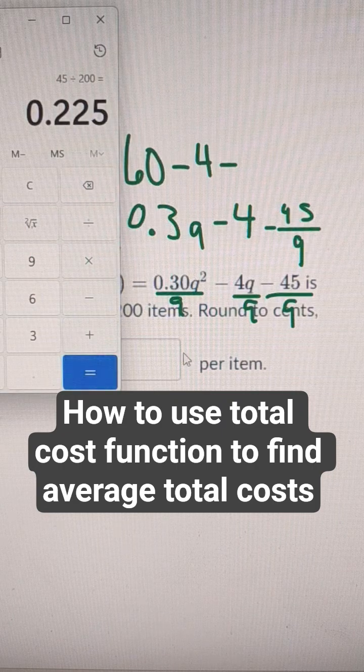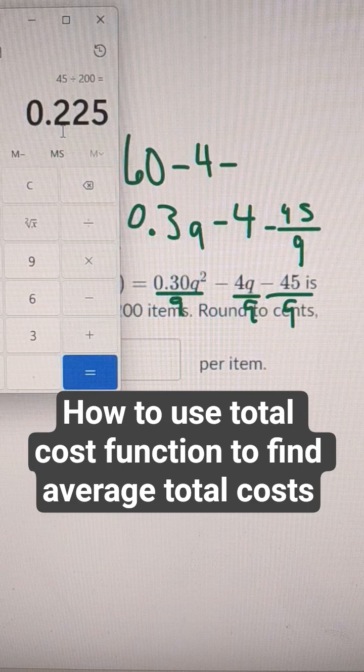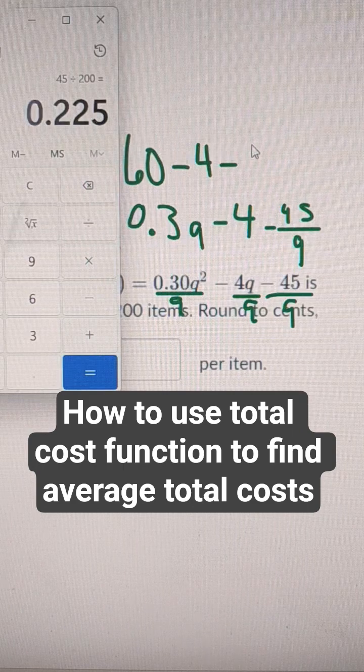So 45 over, no, sorry, 200 rather, is 0.22. It's 22.5 cents, 0.225.